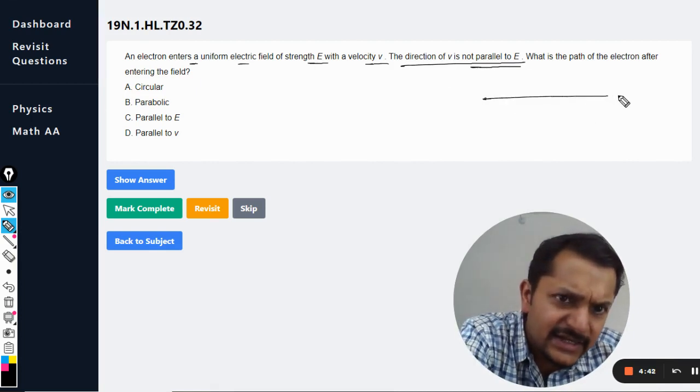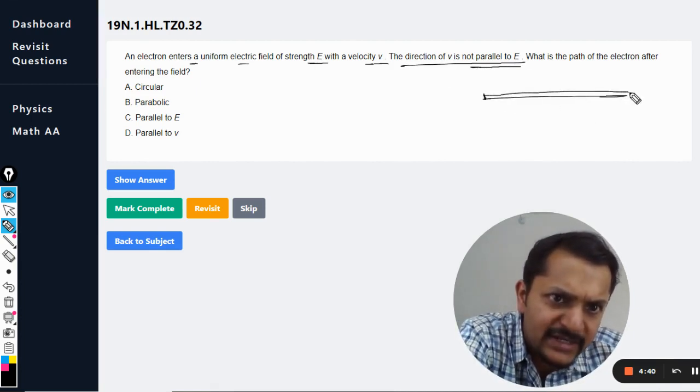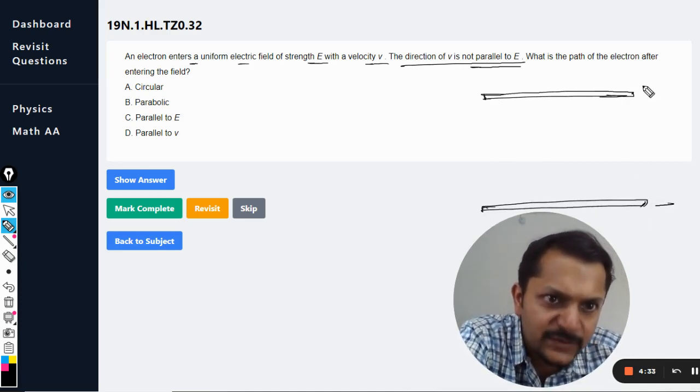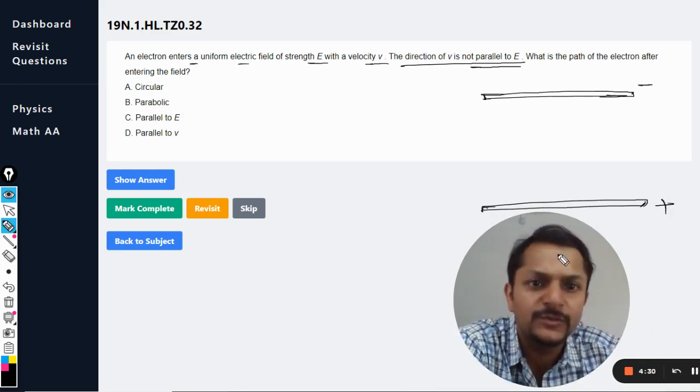Let us take this example. This is the plate here, just like a capacitor's plate, and this is another plate here. This plate is negatively charged, the upper is negative, the downward is positive.